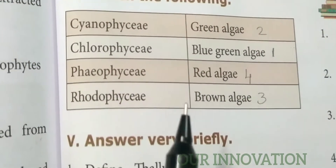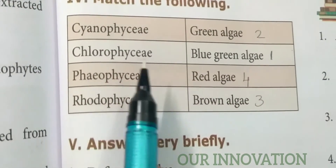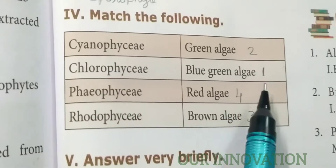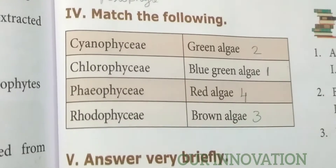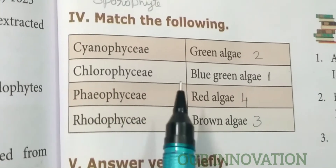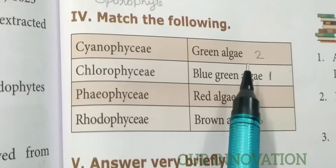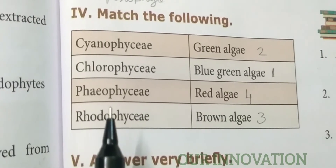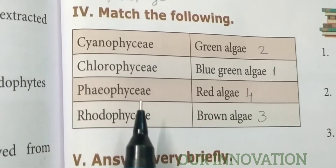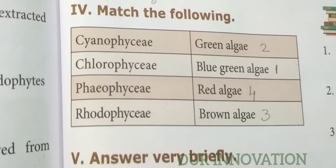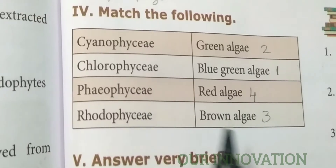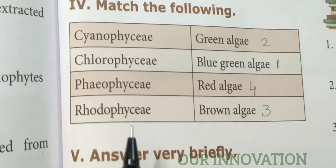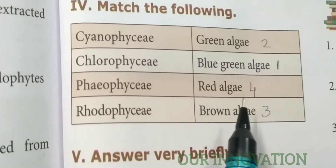Match the following: Cyanophyceae — blue-green algae. Chlorophyceae — green algae. Phaeophyceae — brown algae. Rhodophyceae — red algae.